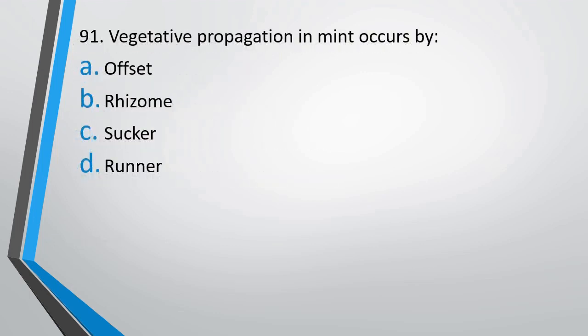Question number 91: Vegetative propagation in mint occurs by — offsets, rhizome, suckers, or runners? The correct answer is option C, suckers.